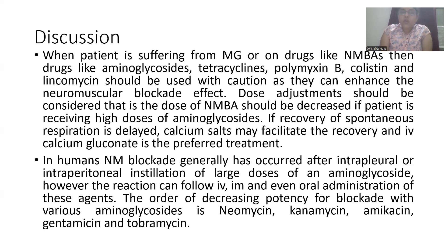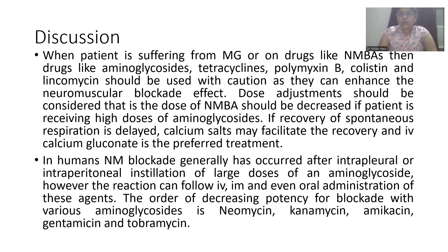In humans, neuromuscular blockade has generally occurred after intrapleural or intraperitoneal instillation of large doses of aminoglycosides. However, the condition can follow IV, IM, or even oral administration of these agents. The order of decreasing potency of neuromuscular blockade with various aminoglycosides is: neomycin, kanamycin, amikacin, gentamicin, and tobramycin.